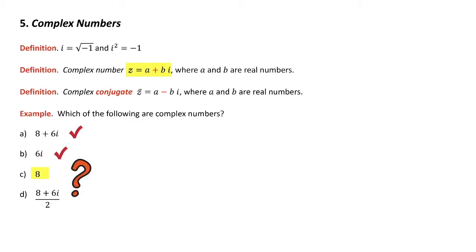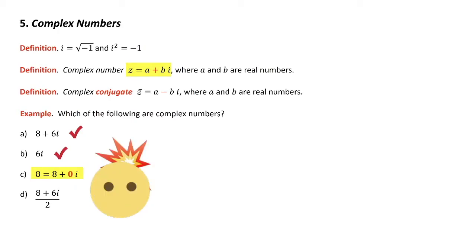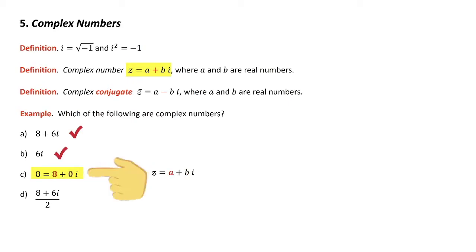How about that one? Can I put it in this form? I did it again — zero for the imaginary part. So yes, a real number can be considered a complex number, with the imaginary part as zero. All we're doing is playing the exact same game — we did it with polynomials, we did it with lines, mx plus b.